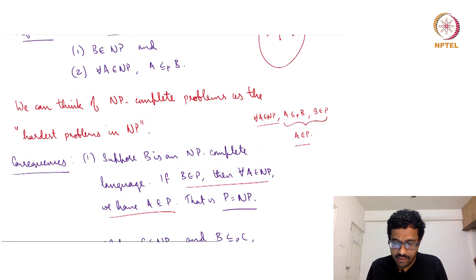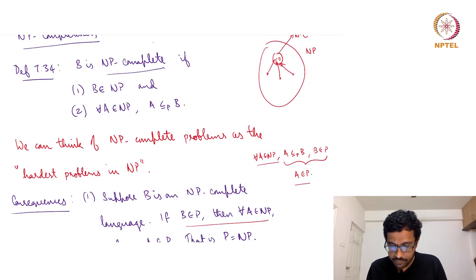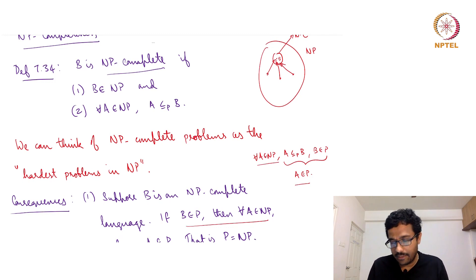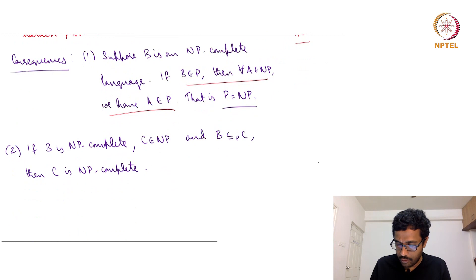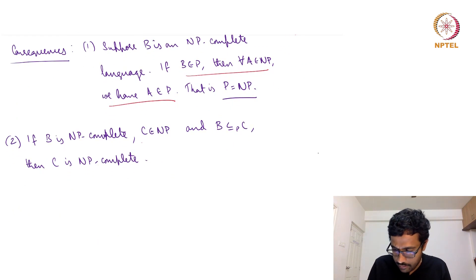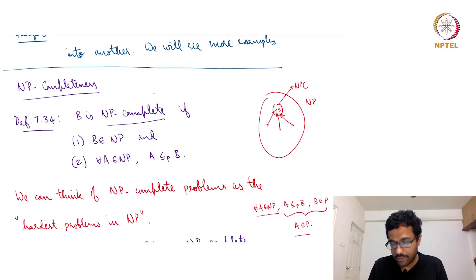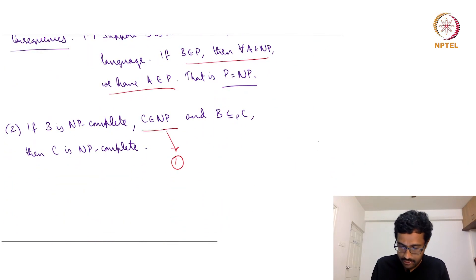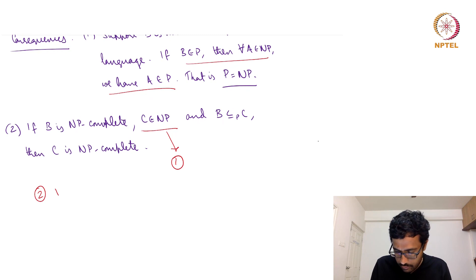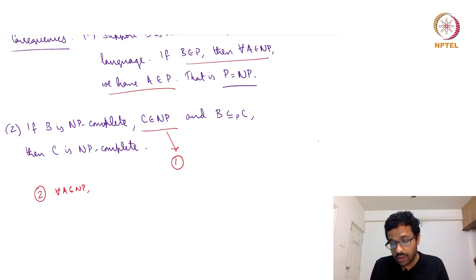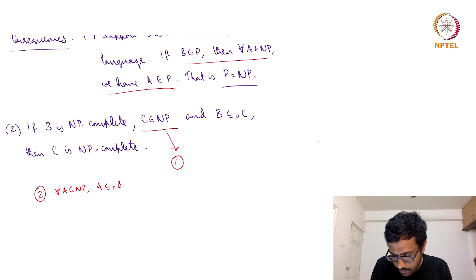To show that C is NP-complete, we have to show two things. First, C is in NP — that is already given, so condition 1 is satisfied. Second, for all A in NP, A reduces to C. We know that B is NP-complete, so we know that A reduces to B.